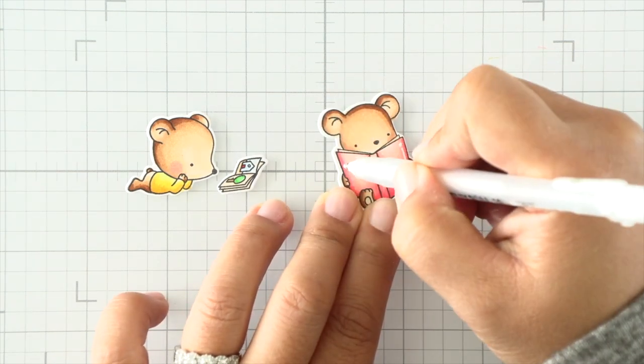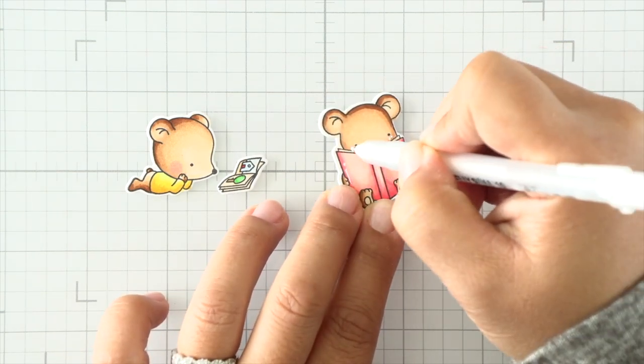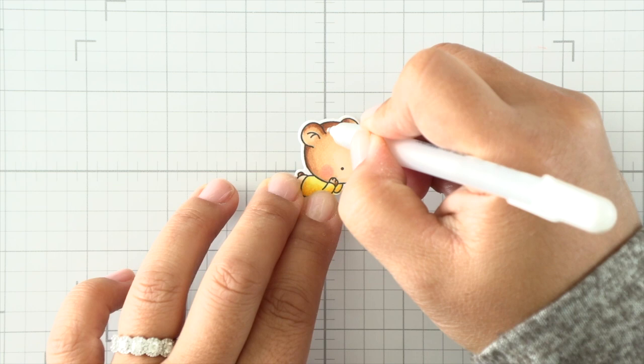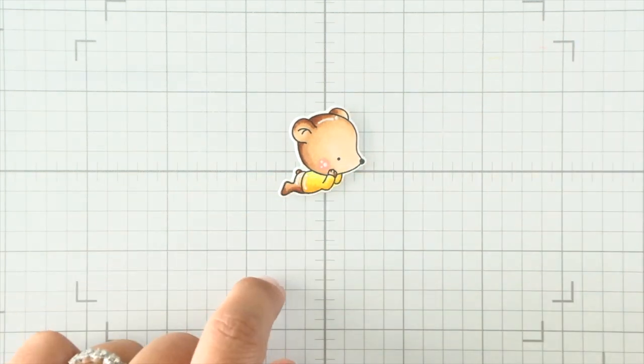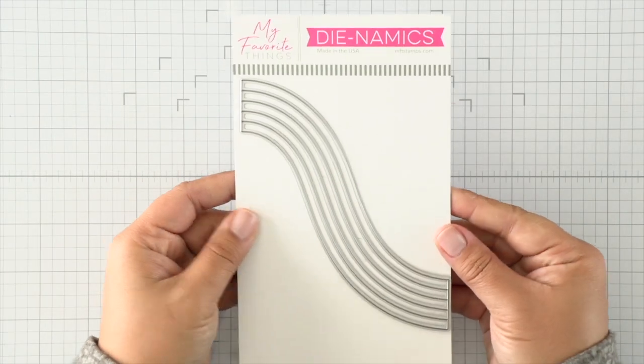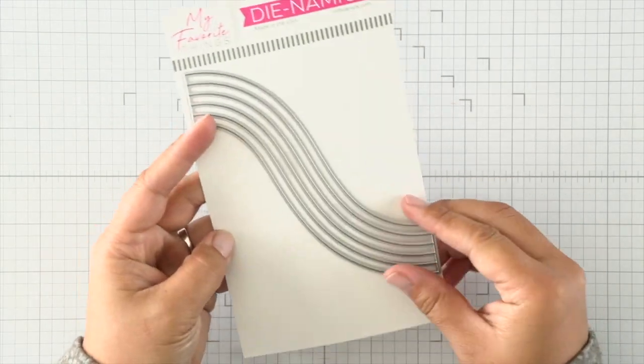Once I'm done coloring, I'm going to add some gel highlights with my white gel highlight pen. It just gives the image a little bit of interest and pop. Once I'm done die cutting, I'm going to set that aside.